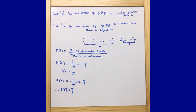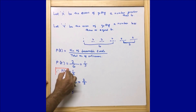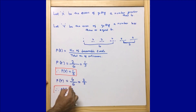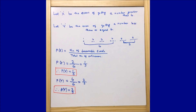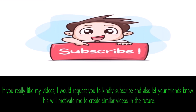So that's all. These are the two answers: the probability of getting a number greater than 4 is 1/3, and the probability of getting a number less than or equal to 4 is 2/3. Hope you understood this calculation — it is very simple and easy. Just understand the question and represent it on paper to get direction. If you have any questions or doubts, please reach out in the comment section. If you like my videos, please subscribe and let your friends know. Thank you. Bye.